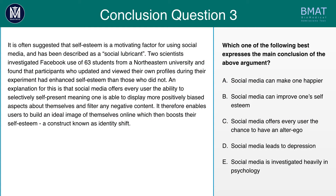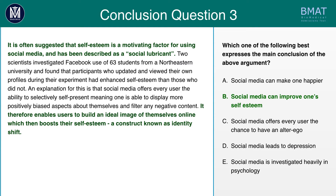Have a go at this question, which is a lot more straightforward and traditional, where we're asked to find the main conclusion. You can use the process of elimination, and you can also use conclusion and premise identification to find your answer. This should be fairly obvious — you should be able to use the trigger word 'therefore' to help guide you that this whole argument is referring to self-esteem. It is providing a compelling case for why social media affects self-esteem, and 'therefore' is a good trigger word here.